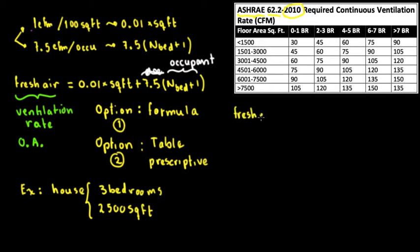Fresh air, or outside air, equals to 0.01 times 2,500 square feet plus 7.5 times number of bedrooms, which is 3, plus 1. So if we do the math, the fresh air CFM is going to be equal to 55 CFM. This is more precise.